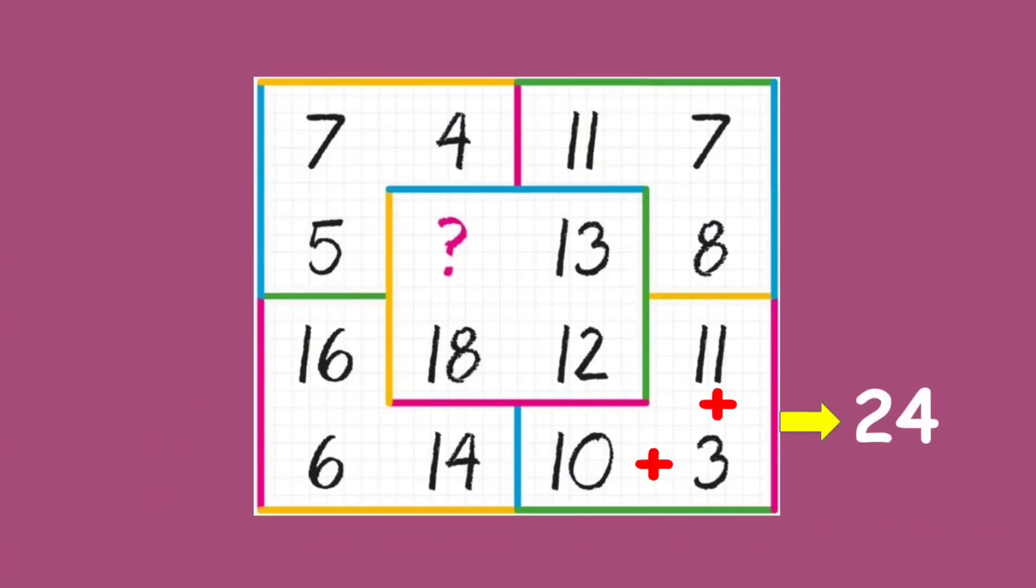Similarly, when we add the numbers on the next corner, we get 24. And half of 24 is 12. Again we can see that in the inner square, the number 12 is there.